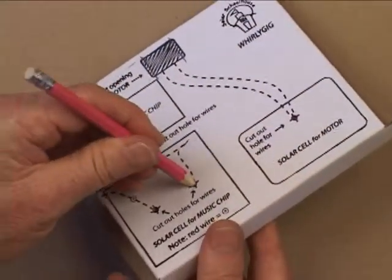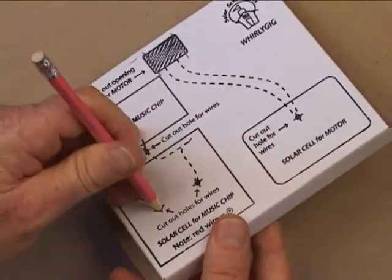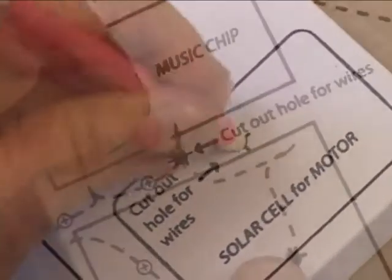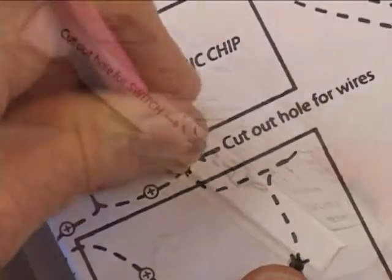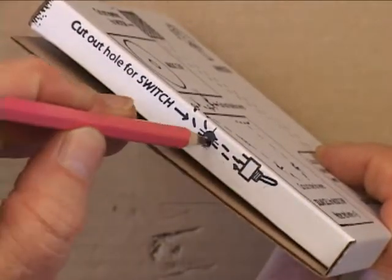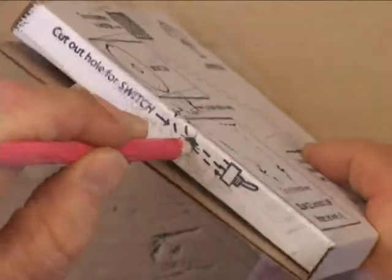Then use a sharp pencil or exacto knife to punch holes through each of the five crossed black dots. Be sure to make the hole for the switch precisely in the middle of the box's edge. This might not align exactly with the black dot.